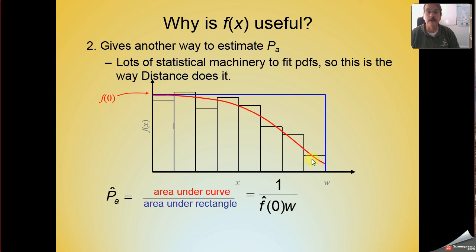If this red line is now the PDF, the probability density function, we can still estimate P sub a as the area under the curve divided by the area under the rectangle. But now we can express each of those quantities somewhat differently. The area under the curve is now equal to 1 because that is a feature that probability density functions have. Their area, the area under them, is equal to 1 by definition.